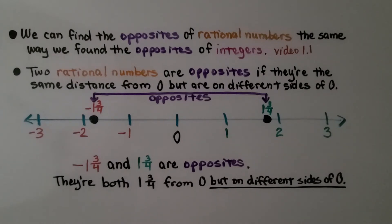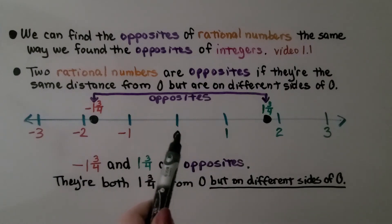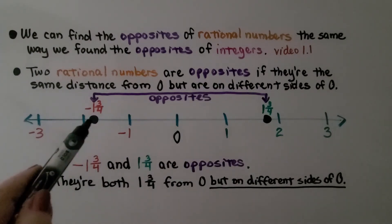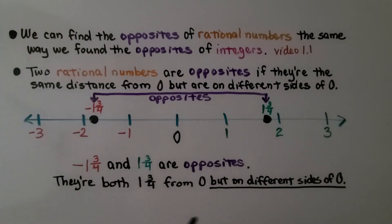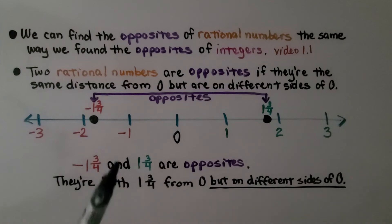We can find opposites of rational numbers the same way we found the opposites of integers — we learned that in video 1.1, which is linked in this description. Two rational numbers are opposites if they're the same distance from 0 but on different sides of 0.